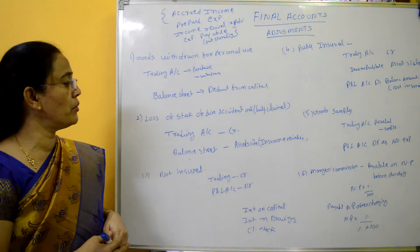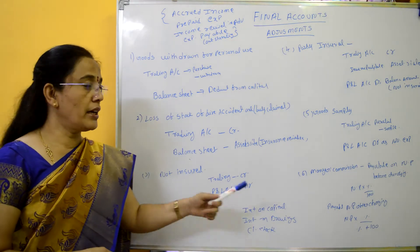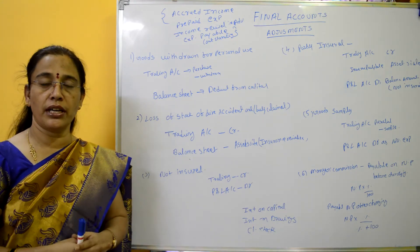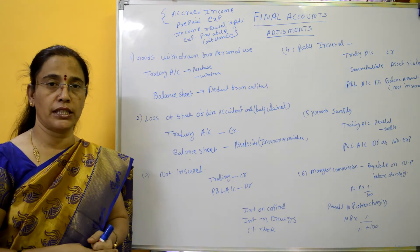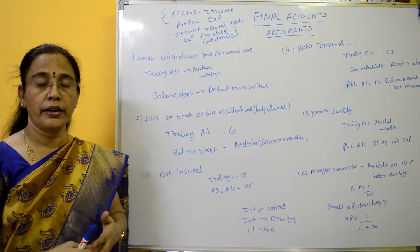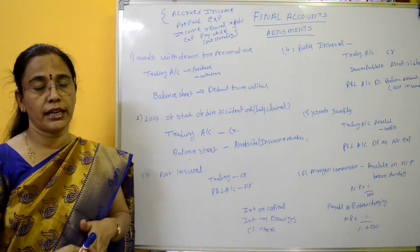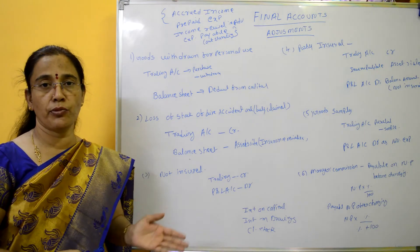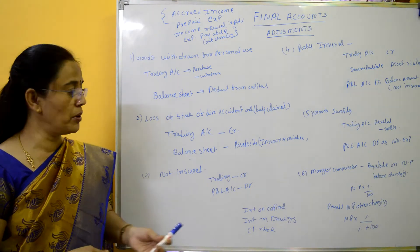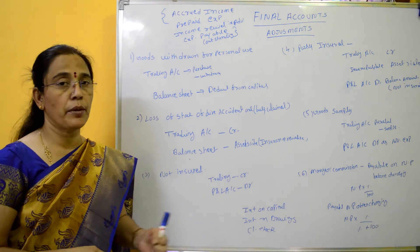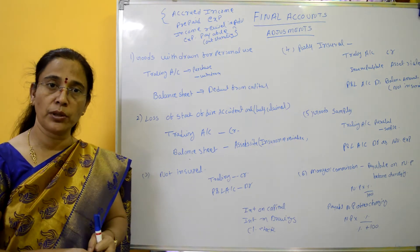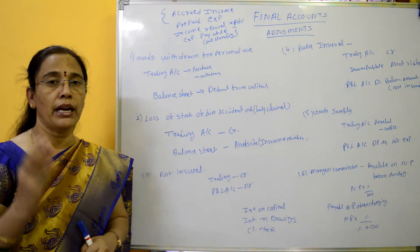Next, we have interest on capital. Interest on capital is treated as a direct expense — debit side of the profit and loss account — and it is shown on the liability side of the balance sheet.